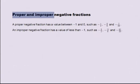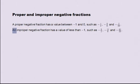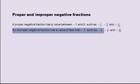Proper and improper negative fractions. A proper negative fraction has a value between minus one and zero, such as minus a half, minus five-sixths, and minus seven-twentieths. An improper negative fraction has a value of less than minus one, such as minus three over two, minus eleven over six, and minus sixty-one over twenty.